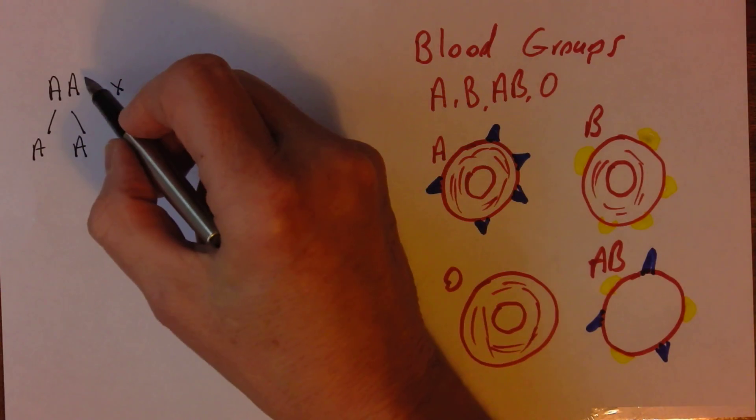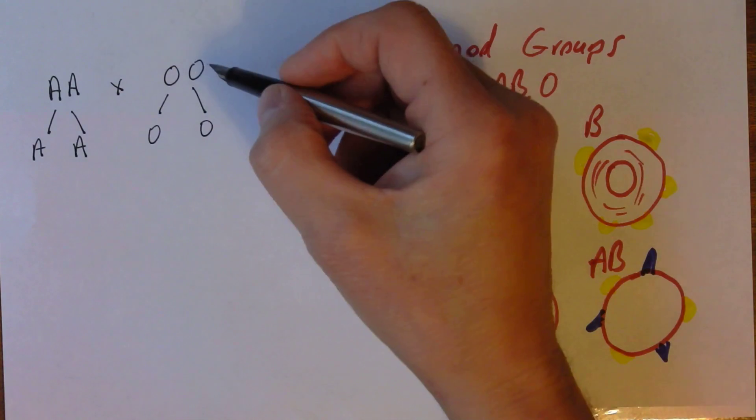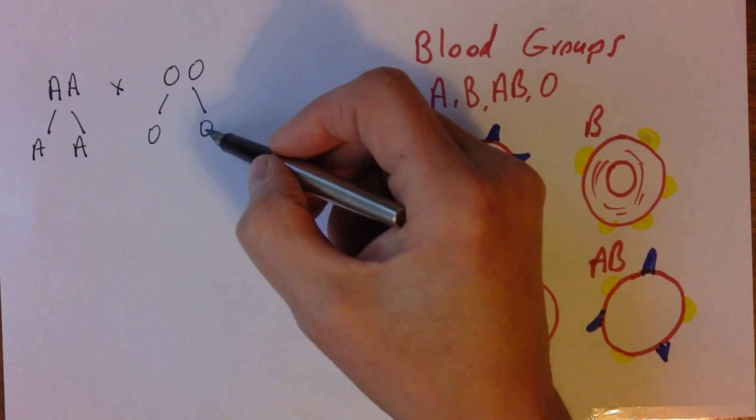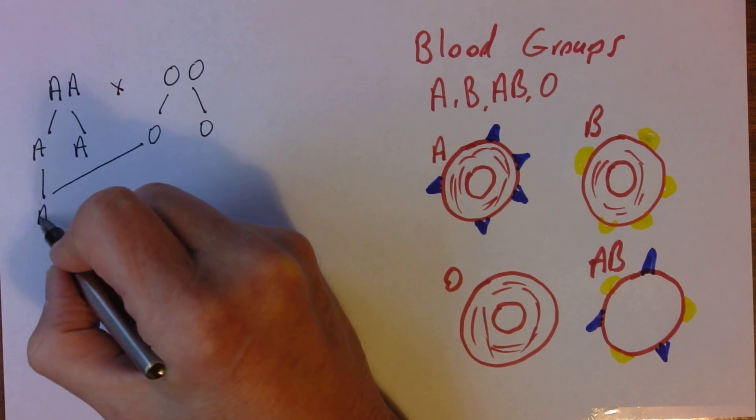So here we have two genotypically homozygous parents, the diploid cells. They produce the haploid gametes, and that could combine with that, and that will give us AO.